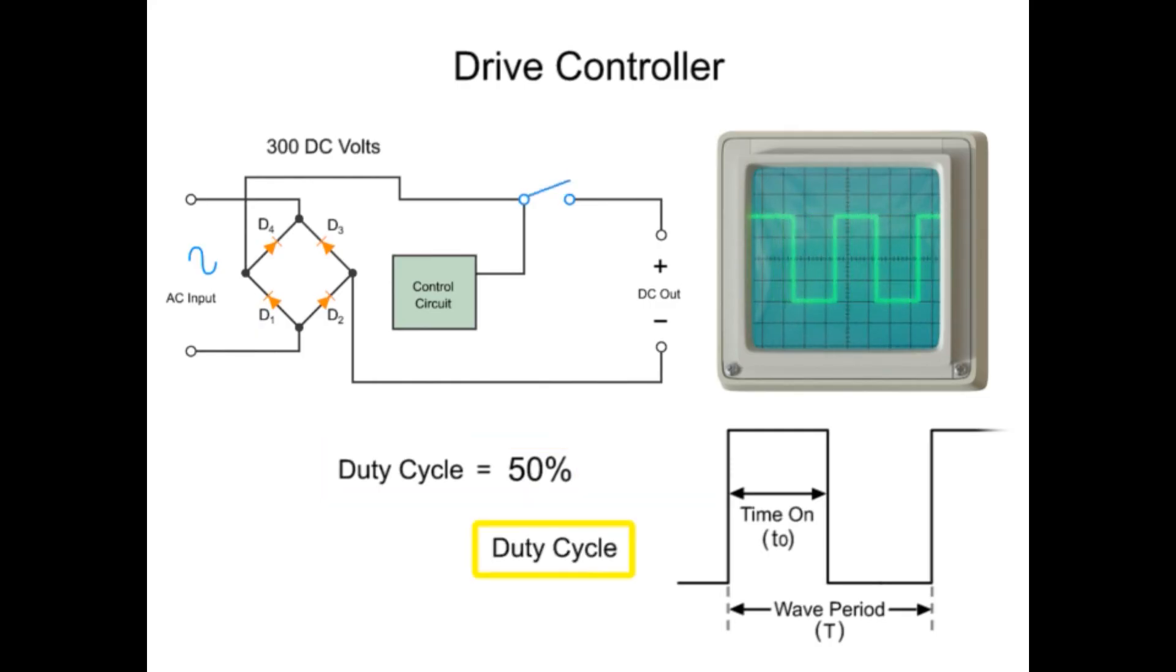Multiplying the duty cycle times the input voltage will give you the voltage output. In this example, a 300 volt input will be modulated by 50 percent, so the final voltage delivered to the load, or motor, is 150 volts. Thus, controlling the speed of a motor can be achieved by modulating the square signal waveform.